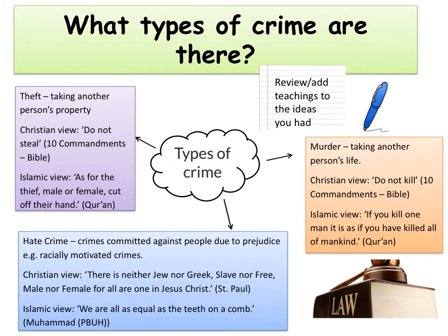Review or add to the teachings you had for each type of crime. The first is theft — taking another person's property. The Christian view could come from the Ten Commandments: do not steal. The Islamic view from the Quran: as for the thief, male or female, cut off their hand. Both views obviously go against the idea of theft. Another type of crime you need to know about specifically is murder — taking another person's life intentionally. The Christian view again comes from the Ten Commandments: do not kill. In terms of Islam, we could use: if you kill one person, it's as if you've killed all of mankind. Both teachings directly go against taking the life of another person.